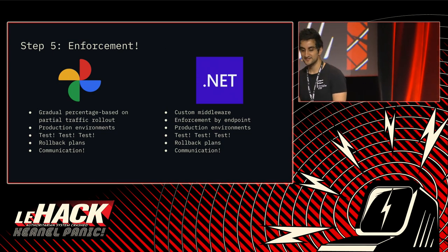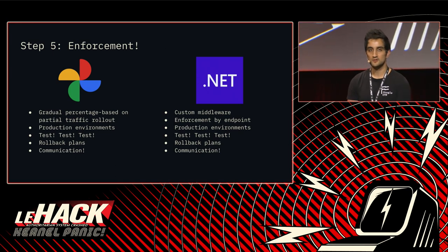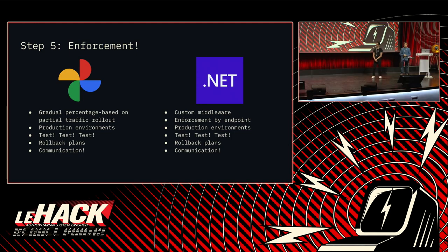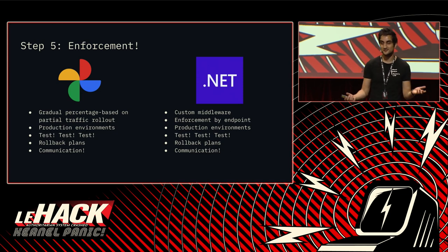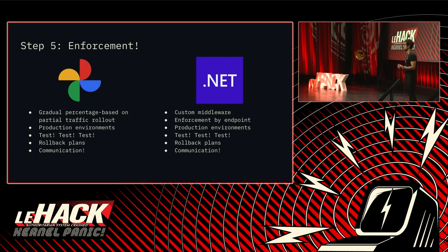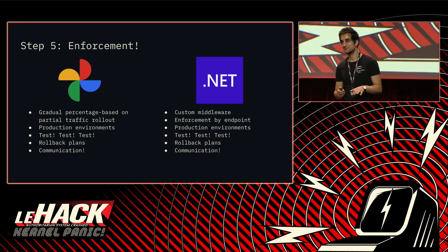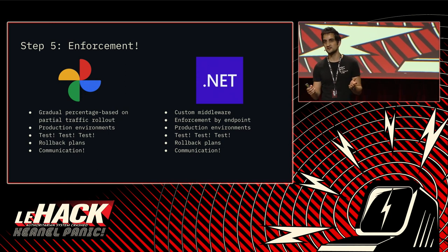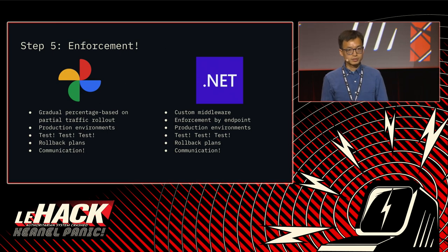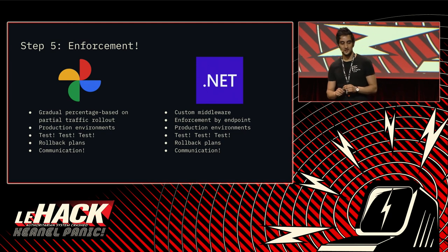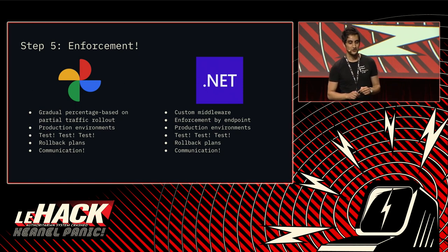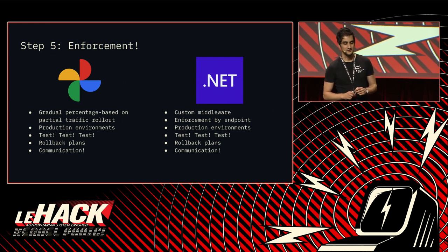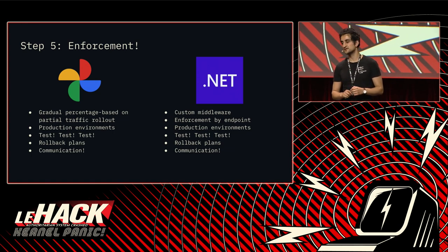The most important part from an organizational complexity standpoint is communication. We have hundreds of different products and lots of different teams, so we let the engineers and release managers on each particular product know this is happening, so that if there are any user-reported instances of breakages, they get back to us immediately and know who to contact. The same advice applies externally: do the rollout gradually through all users, use middleware, enforce by endpoint to be extra cautious. Keep testing to detect issues before enforcement. From our experience, you most likely won't see any breakage at this point because you already took care of all the violations beforehand.